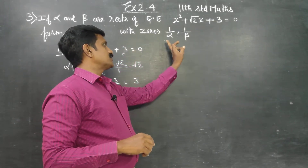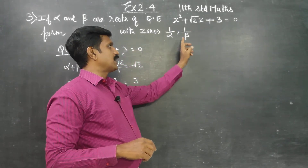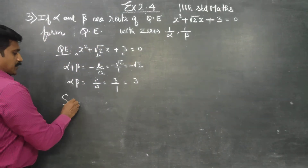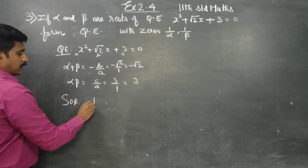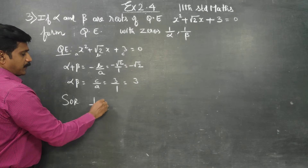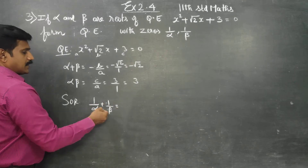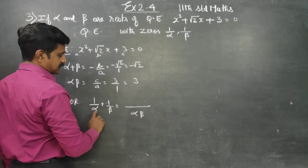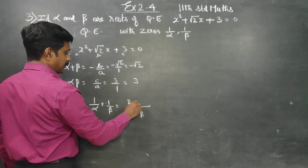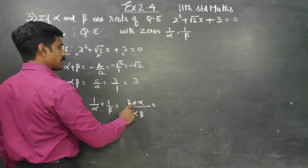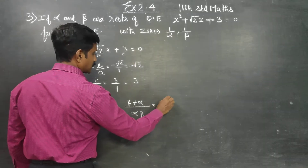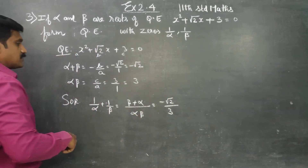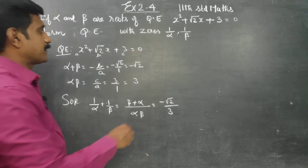I want a quadratic equation with roots 1 by alpha and 1 by beta. First, the sum of the new roots: 1 by alpha plus 1 by beta. Taking LCM by cross multiplying gives beta plus alpha over alpha beta, which equals alpha plus beta over alpha beta. That is minus root 2 divided by 3. Sum of the new roots is ready.